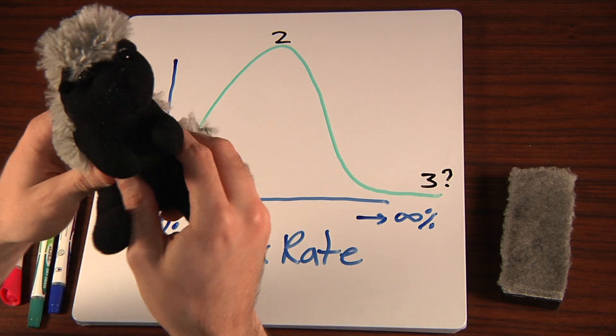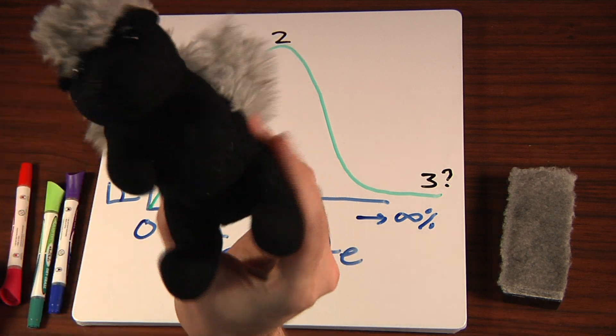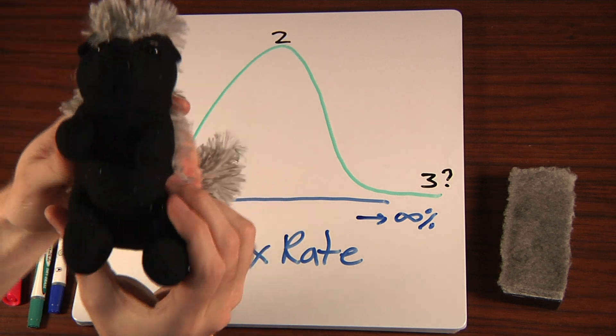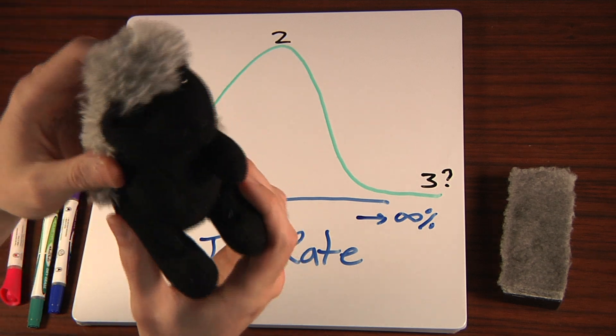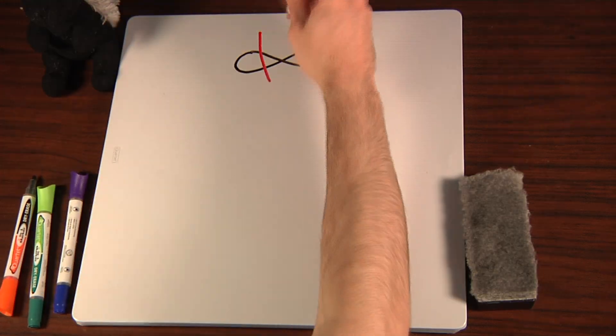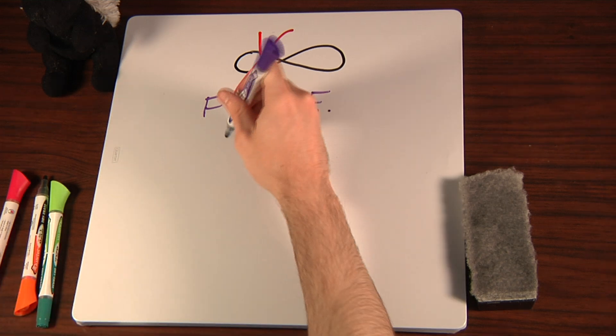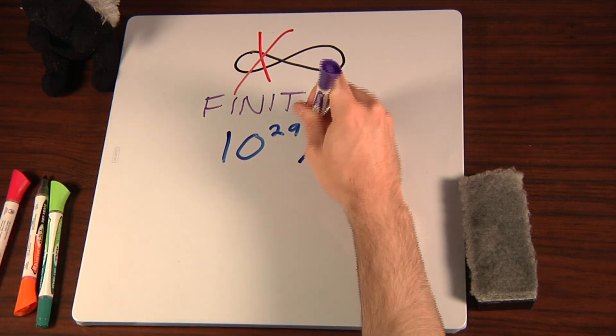Say I go to the dollar store and see this adorable honey badger plushie. Ooh, fuzzy. If the sales tax were infinite, it's sort of a non-starter, so no honey badger for me. But how about a finite rate, like 100 octillion percent? That's a one followed by 29 zeros, but it is still finite.